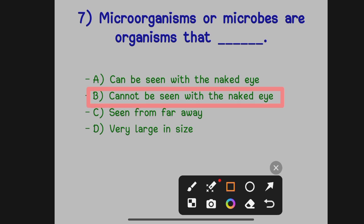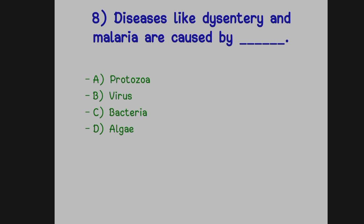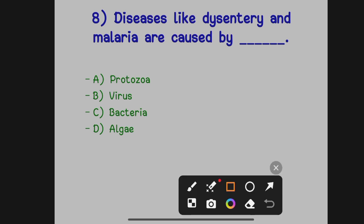We can't see microorganisms with our naked eyes — we have to see them through a microscope. The next question: diseases like dysentery and malaria are caused by dash.